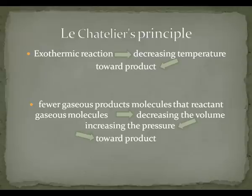Next, Le Chatelier's principle states that a dynamic equilibrium tends to respond so as to relieve the effect of any change in conditions that affect the equilibrium. The two important concepts of this principle applied to ammonia production are: first, in an exothermic reaction, decreasing the temperature would result in the equilibrium shifting toward the product; and second, when there are fewer gaseous product molecules than reactant gas molecules, increasing the pressure would force the equilibrium to shift toward the product.